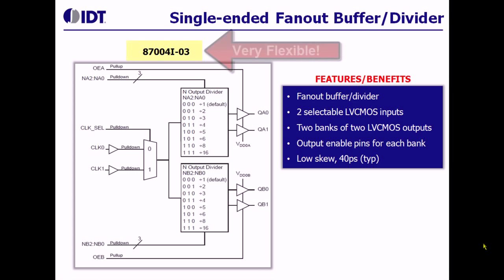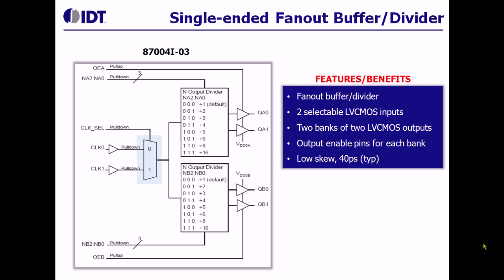This is an example of a very flexible device where, one, we have a MUX at the input stage; two, we have two sets of dividers that are independent of each other; and three, there are two sets of fan-out buffers for each of the banks with an enable signal for each bank. So as you can see, there are various flavors of fan-out buffers available in IDT's portfolio.